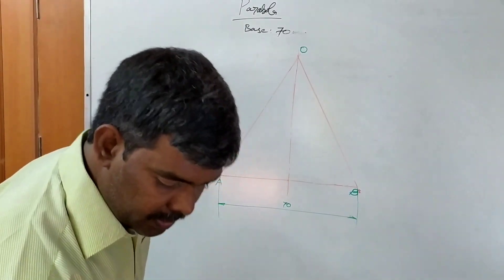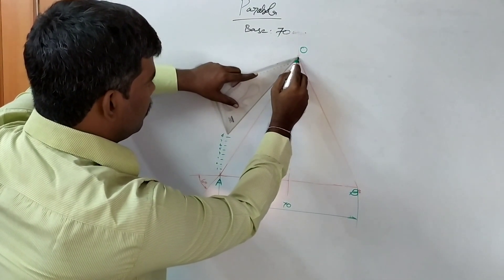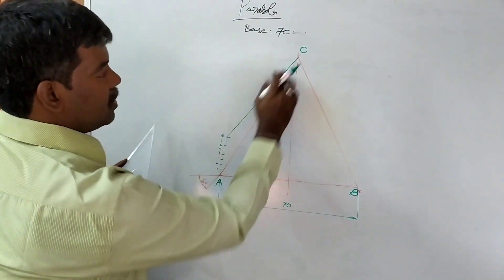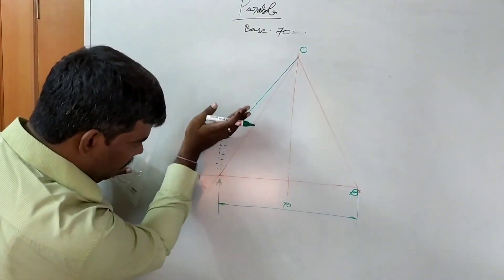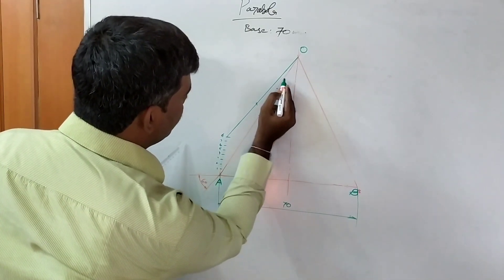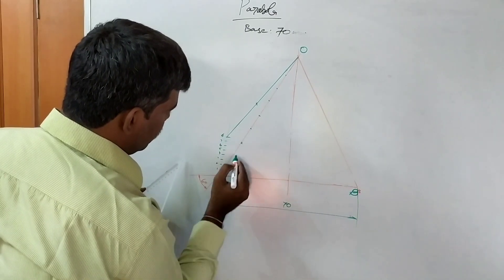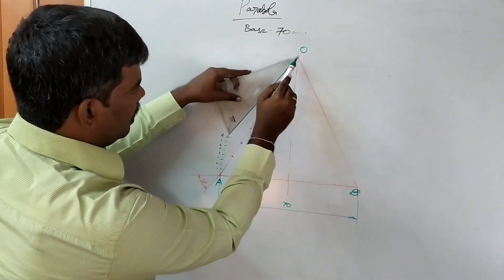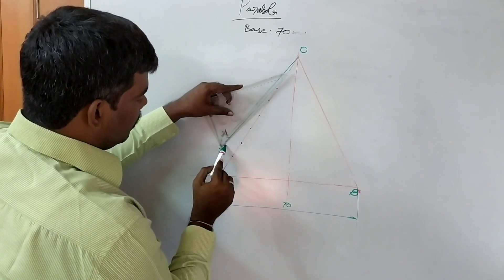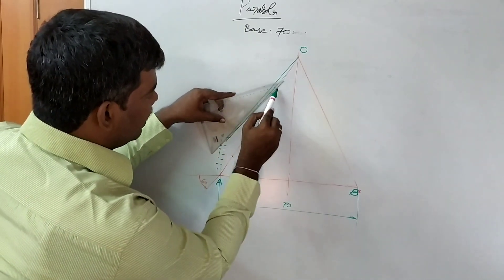After marking the equal parts, you draw a line joining the last point to the last. Then draw parallel lines from last to first. You draw lines parallel to each, from 7 to 6, and so on, so that finally it reaches the apex point.